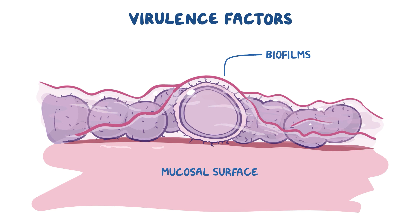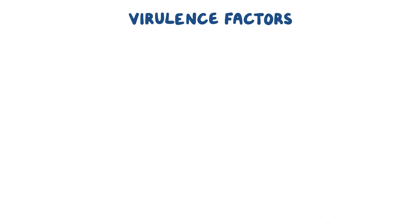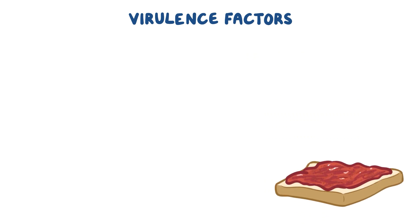A biofilm is basically a layer of goop-like material made of exopolysaccharides, or EPS, where strep pneumoniae bacteria live and reproduce. Comparing a biofilm to strawberry jam, the seeds would be the bacteria and the rest of the jam would be the EPS.